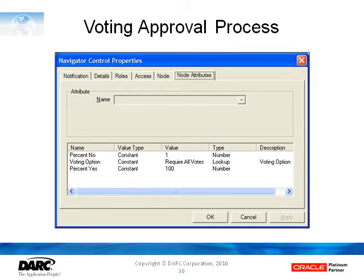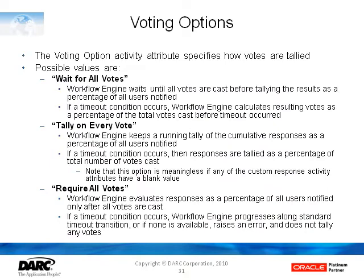When we look at the node attributes, we see the voting option here called require all votes, and that we need a hundred percent yes, which is called blackball — meaning that anybody voting no will cause it to be rejected. Right out of the workflow developer's guide are the different values on the voting option.